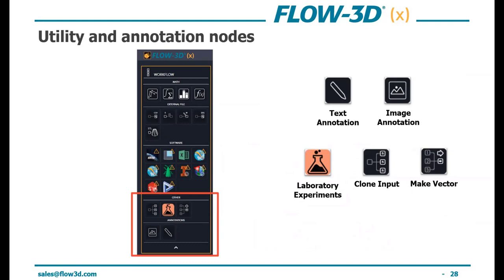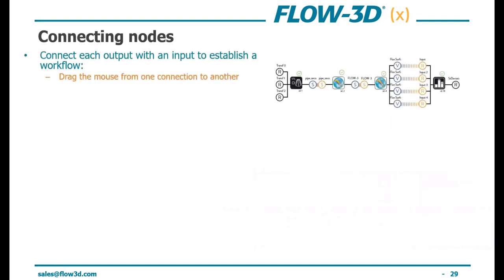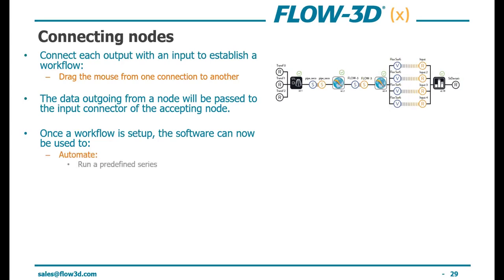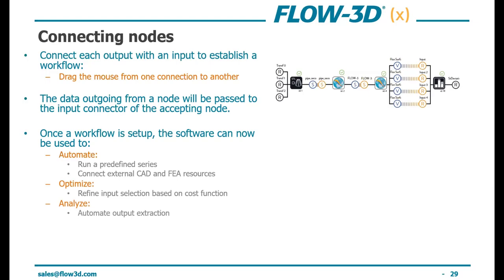Once you've created the workflow, the next step is to connect the nodes — simply drag from one output connector to an input connector. Data outgoing from a node will be passed to the input connector of the accepting node. Once a workflow is set up, the software can automate a predefined series of variables, connect external CAD and FEA resources, optimize by refining input selection based on a cost function, or analyze by automating output extraction. Workflows can range from simple to very complex — this one here is a full high-pressure die-casting gating optimization workflow using a SolidWorks model feeding into a CFD solution to approximate gate cross-sectional areas.